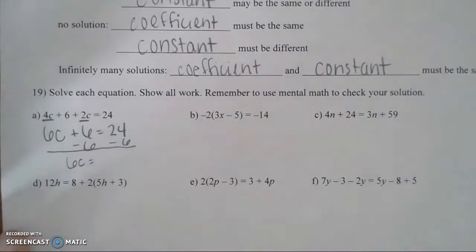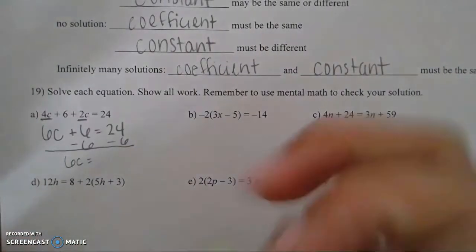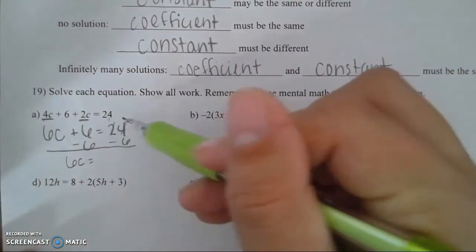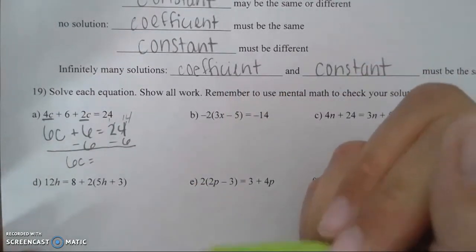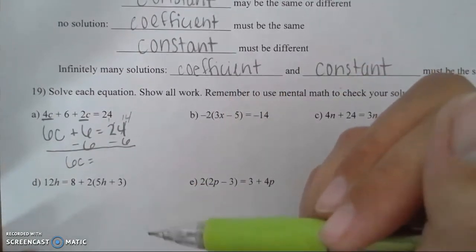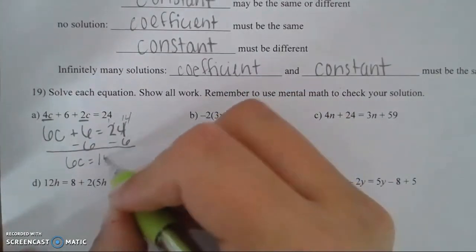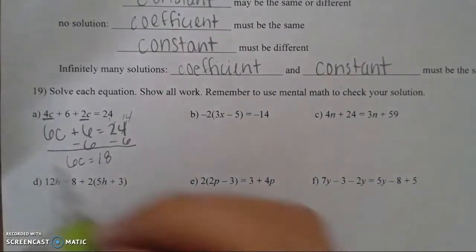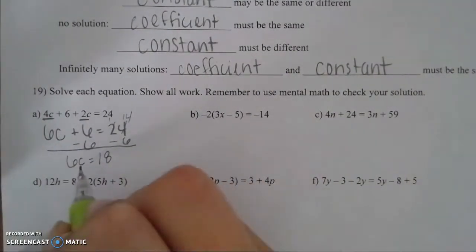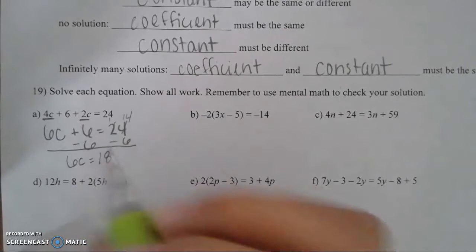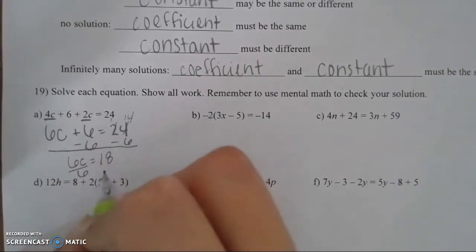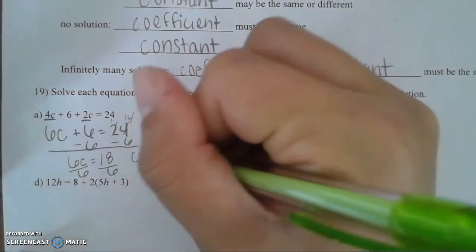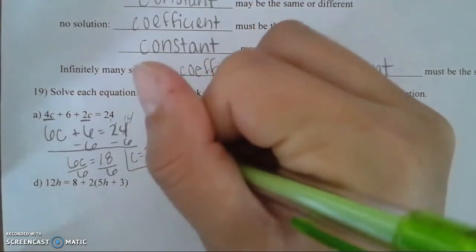After subtracting 6 on both sides you get 6c equals 18. Then to get c by itself, since c and 6 are multiplying, the opposite of multiplying is to divide. So you get c equals 3. Since the like terms were on the same side you combine them normally, then solve a basic two-step equation.